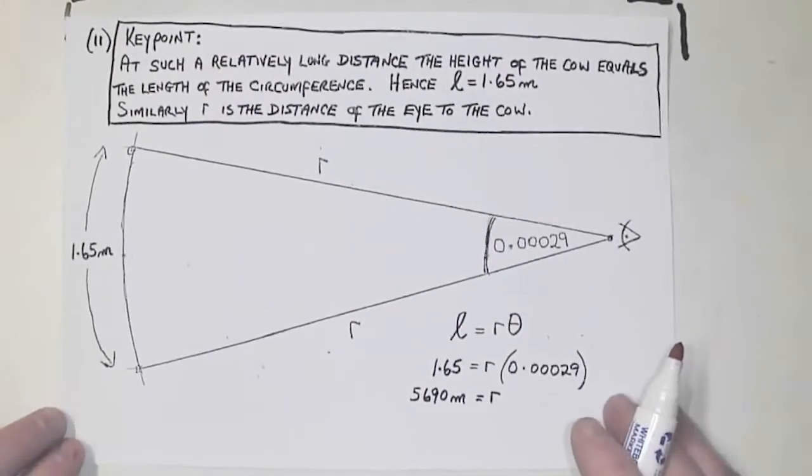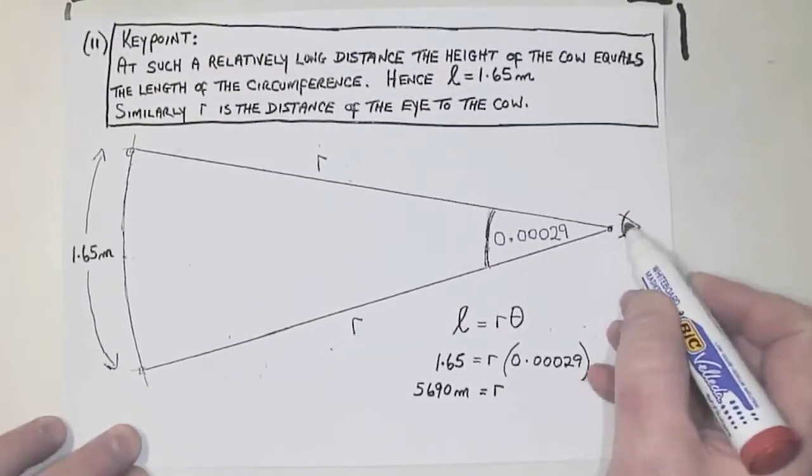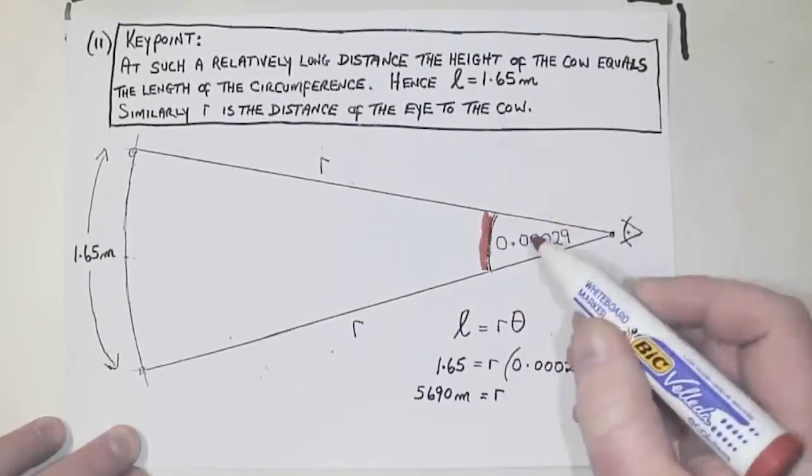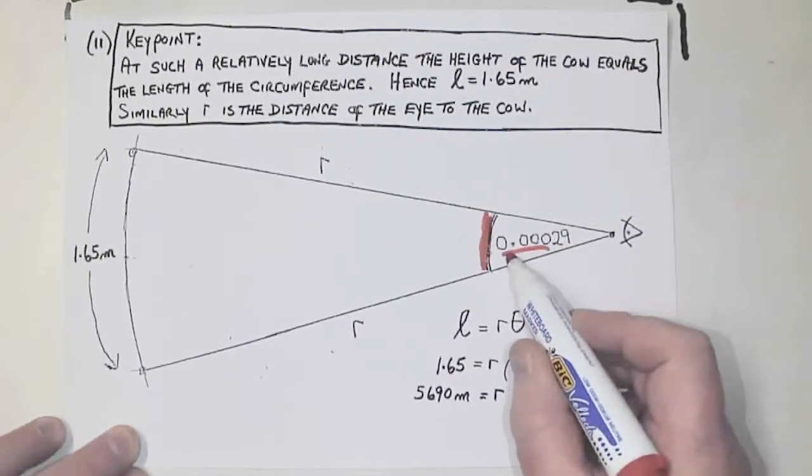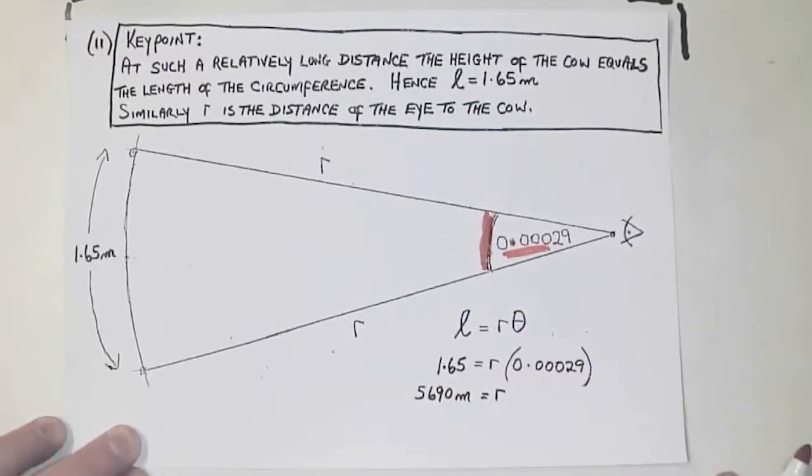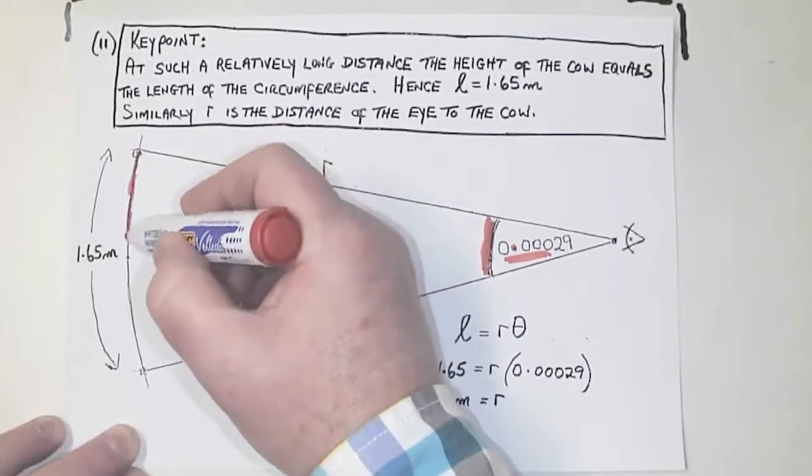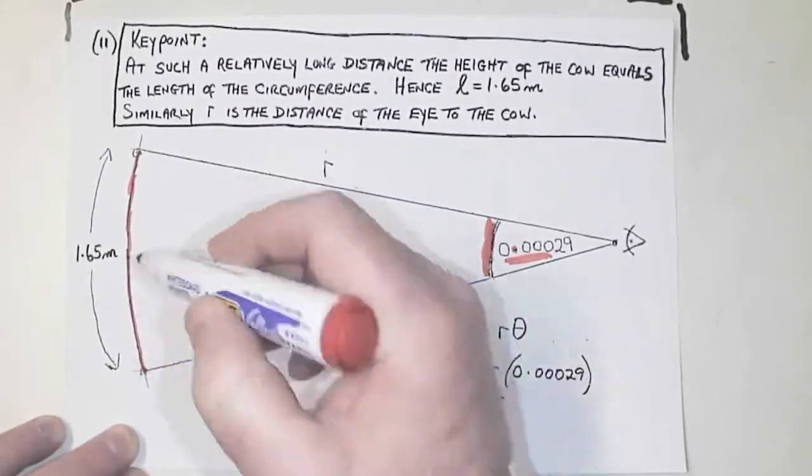In this question, we've got the eye here, and instead of this angle being 1 over 60, that was degrees, we've changed it into radians, because they told us in the question, so I'm taking that as a hint. This here is a curved piece. It's a circle.